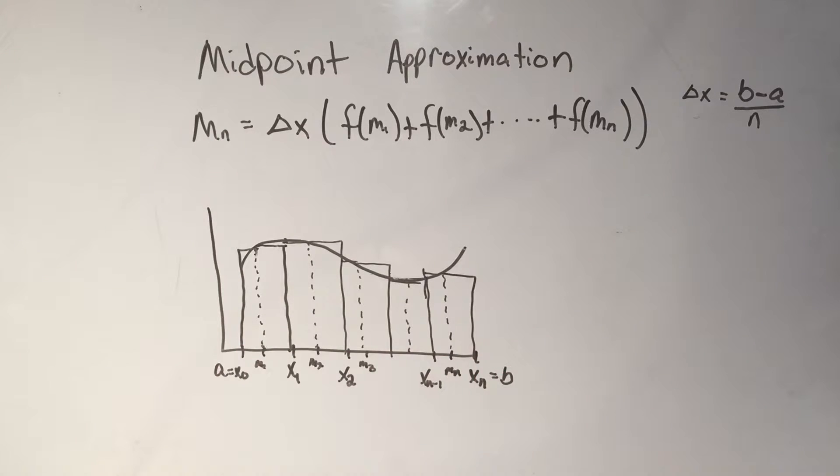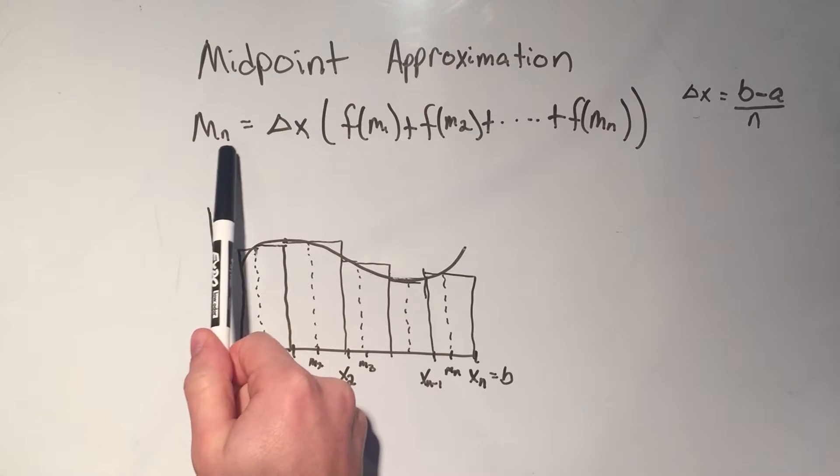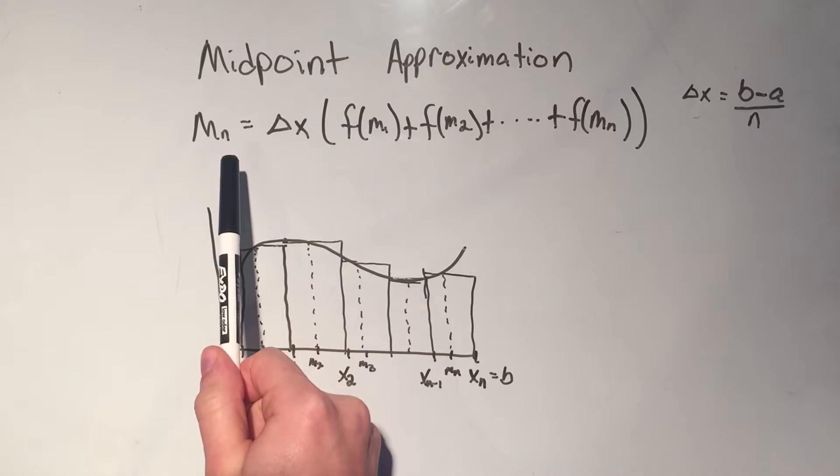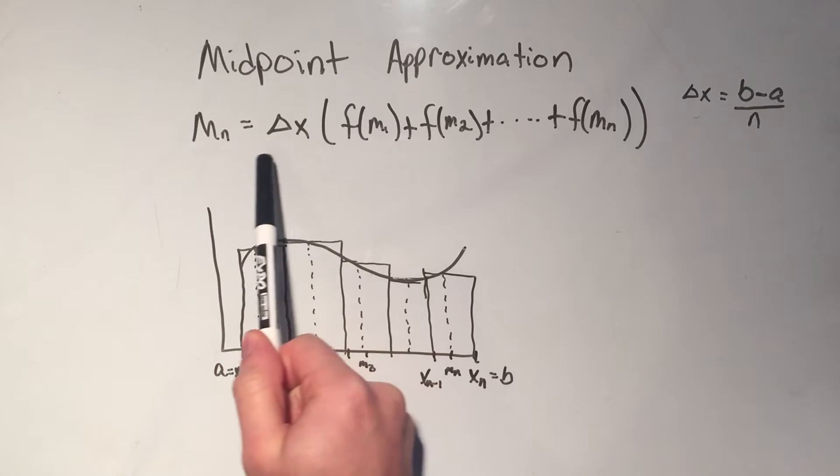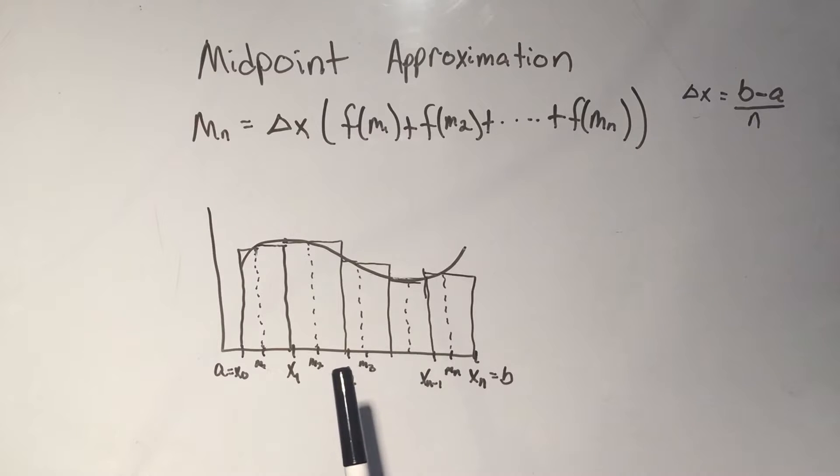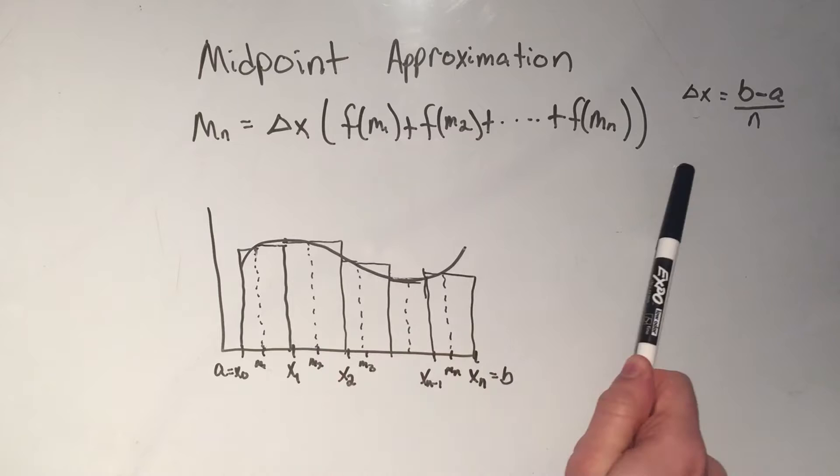Here's the formula, and you'll notice it's very similar to the left-hand sum and the right-hand sum formula. So this m sub n, where n is the number of rectangles or your number of subintervals, is delta x, and remember that delta x is b minus a over n.